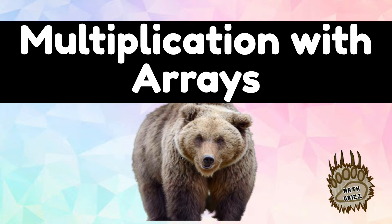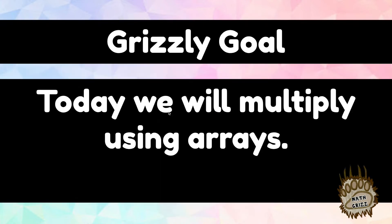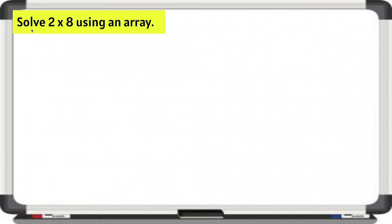Welcome back Math Grizz! Today we will multiply using arrays. Solve 2 times 8 using an array. We can read 2 times 8 as 2 rows of 8. The multiplication sign can stand for 'rows of.'